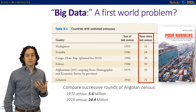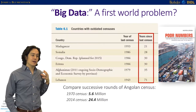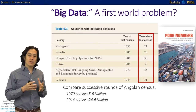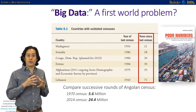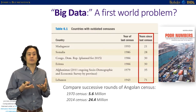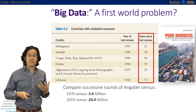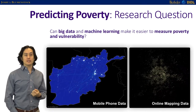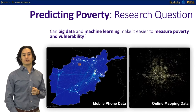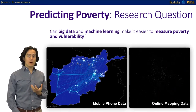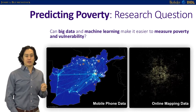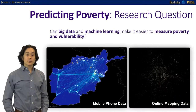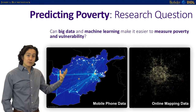The motivation is to ask: is there any way we can take the fancy algorithms coming out of Google, Facebook, and Amazon and apply them to solve pressing issues facing people trying to improve living conditions in developing countries where data is very scarce? The research question we're working on is whether big data and machine learning can make it easier to measure poverty and vulnerability — really the most basic question about measuring quality of life in poor and developing countries.